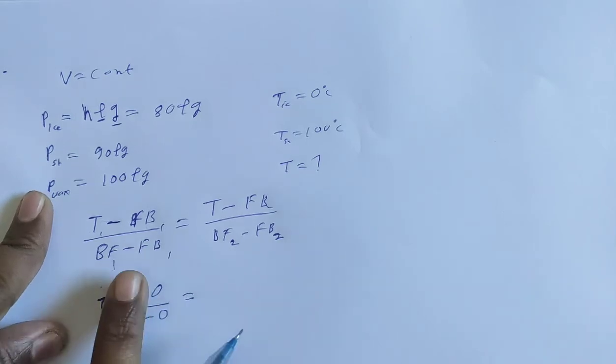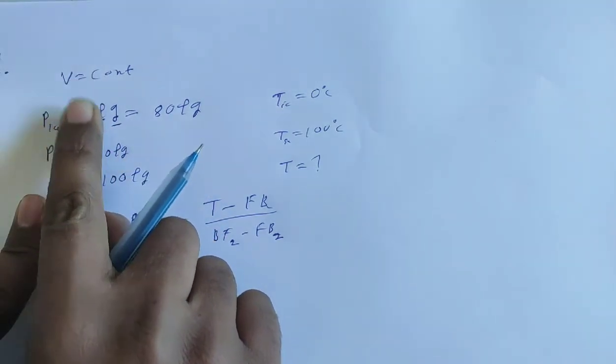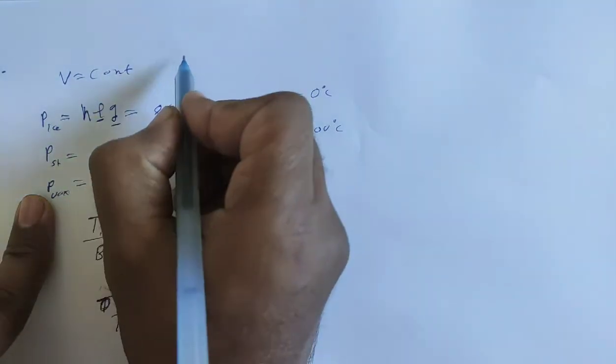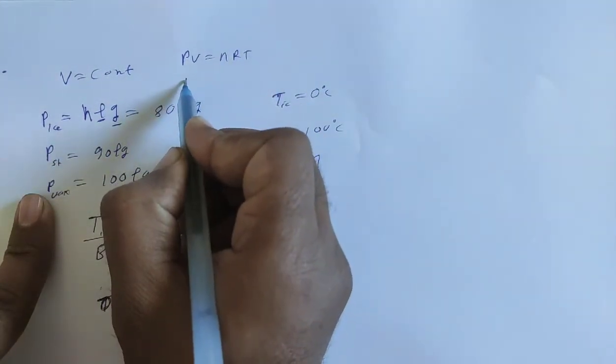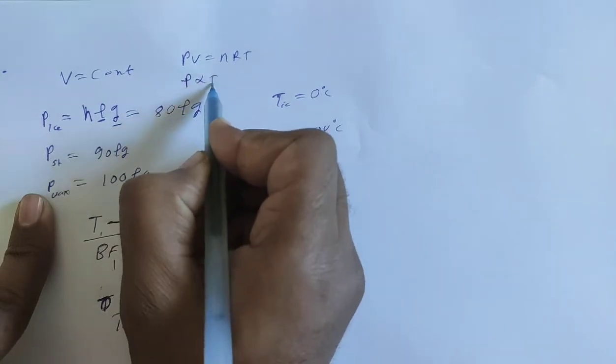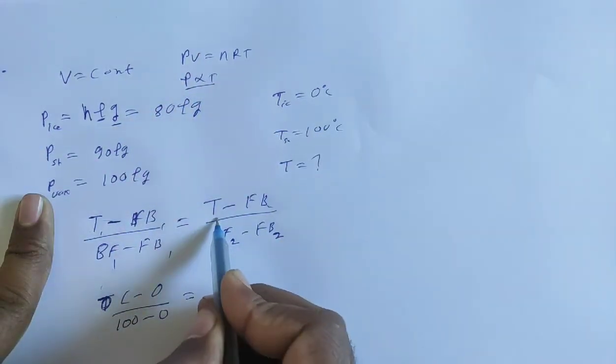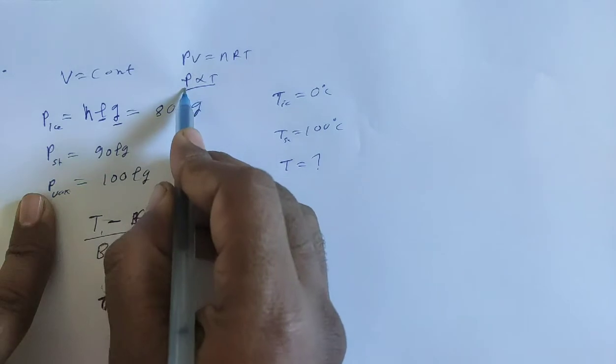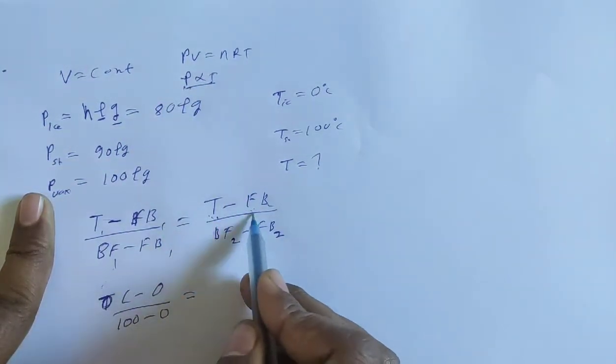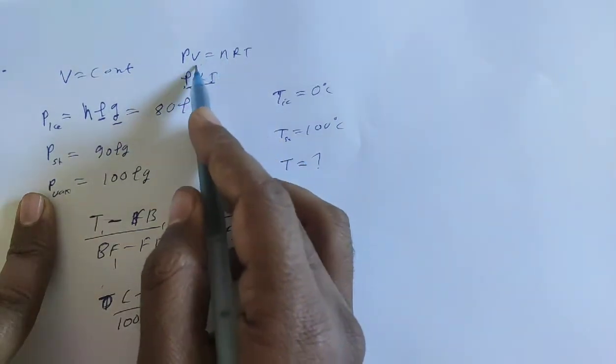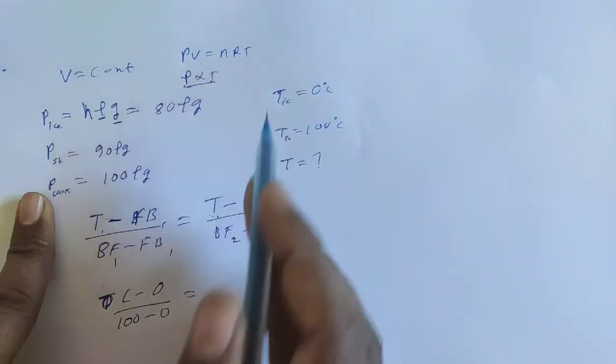Pressure is given, but one thing to note: at constant volume, we can use PV equals nRT. When V is constant, then P is directly proportional to temperature. So we can say P is directly proportional to T, because P is directly proportional when the rest of the terms are constant. In this ratio, the constants cancel out.